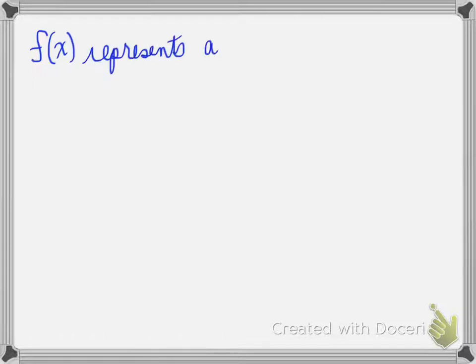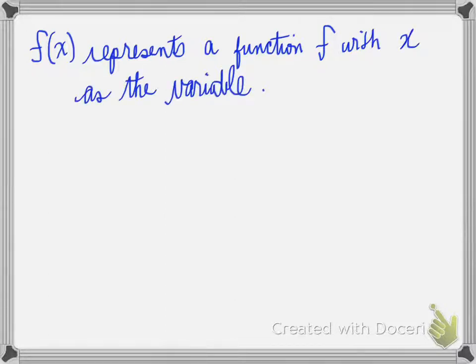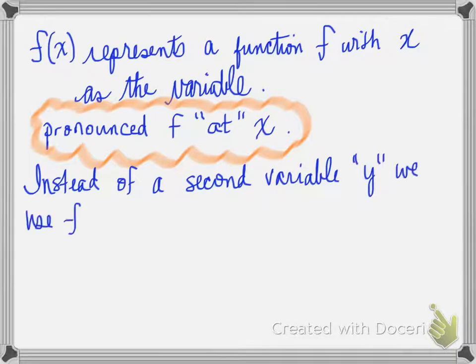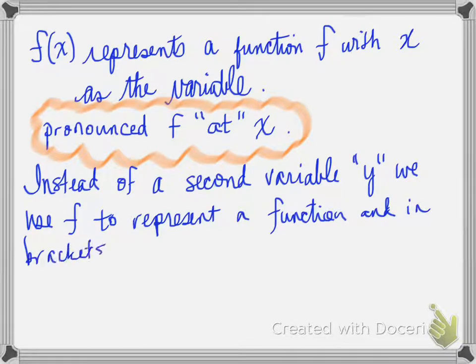f at x is a way to represent a function f with x as the variable. So in the past, we've always looked at equations as y equals. The problem is, is you may have more than one function on a graph. So you have to actually identify which one is f and which one is, sorry, which y we're talking about when you have y equals. Well, function notation helps us identify them as unique functions. So we pronounce this f at x or f of x. So the idea is that instead of using a variable y, we use the idea of a function f, okay, to represent a formula or a function.